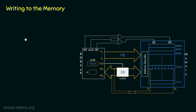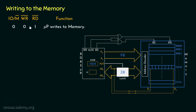In the previous session we learnt about memory read. In this session, since we are going to write to the memory, we will need the specific input sequence for these control signals so that the memory write can happen. When IO/M̄ is 0, WR̄ is 0, and RD̄ is set to 1, this specifies that the microprocessor is going to write to the memory. These are active low pins — when RD̄ is set, the microprocessor is not interested in reading, and since WR̄ is reset to 0, this combination specifies writing. This input sequence is known as memory write.